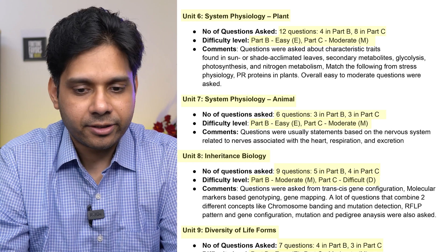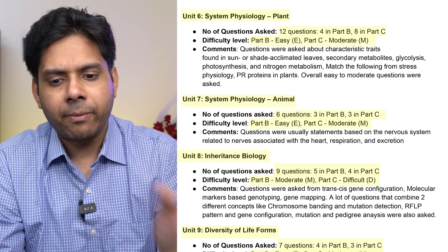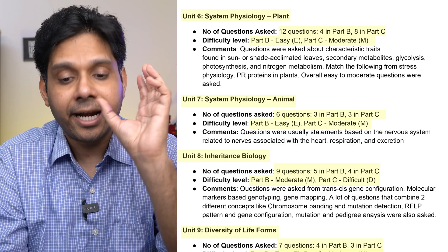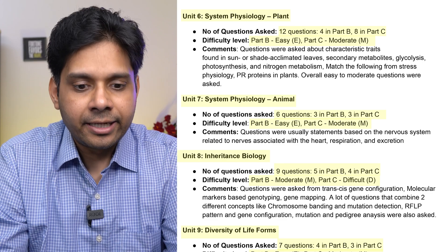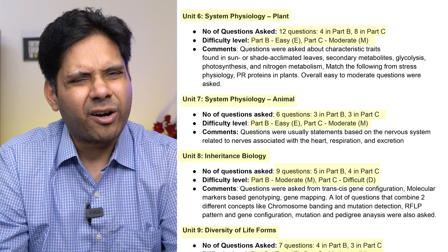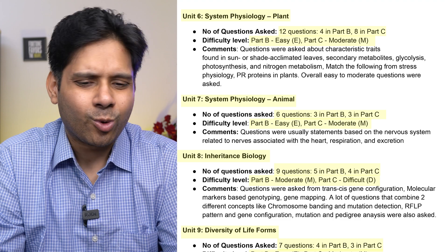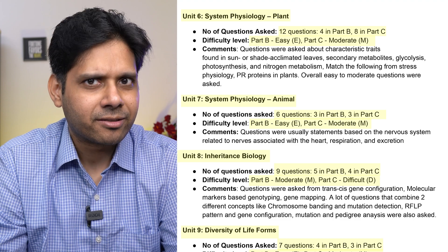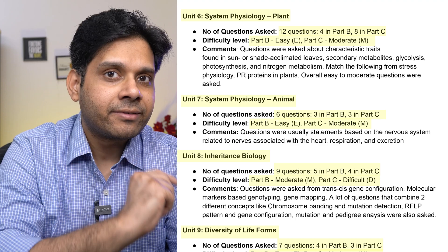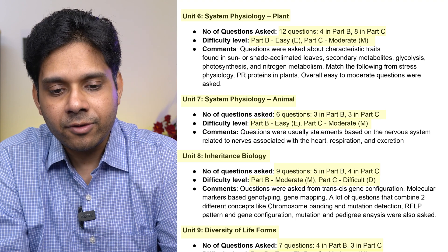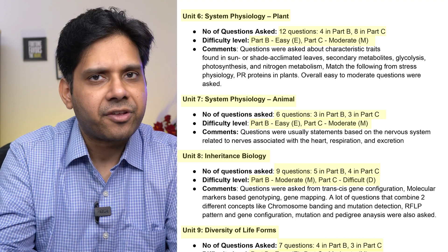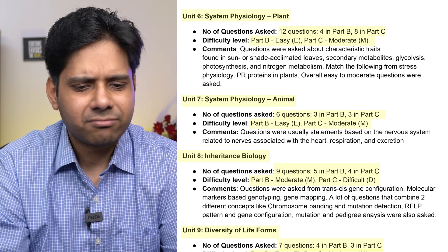Unit 6, Systems Physiology — Plant, had 12 questions: four in Part B and eight in Part C. Difficulty was easy for Part B and moderate for Part C. So plant physiology was not that difficult.